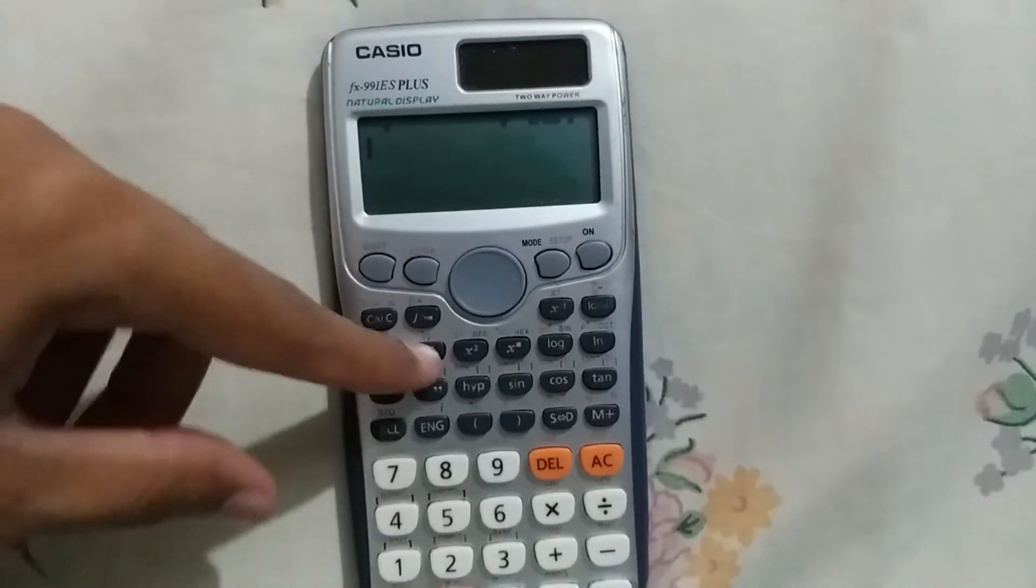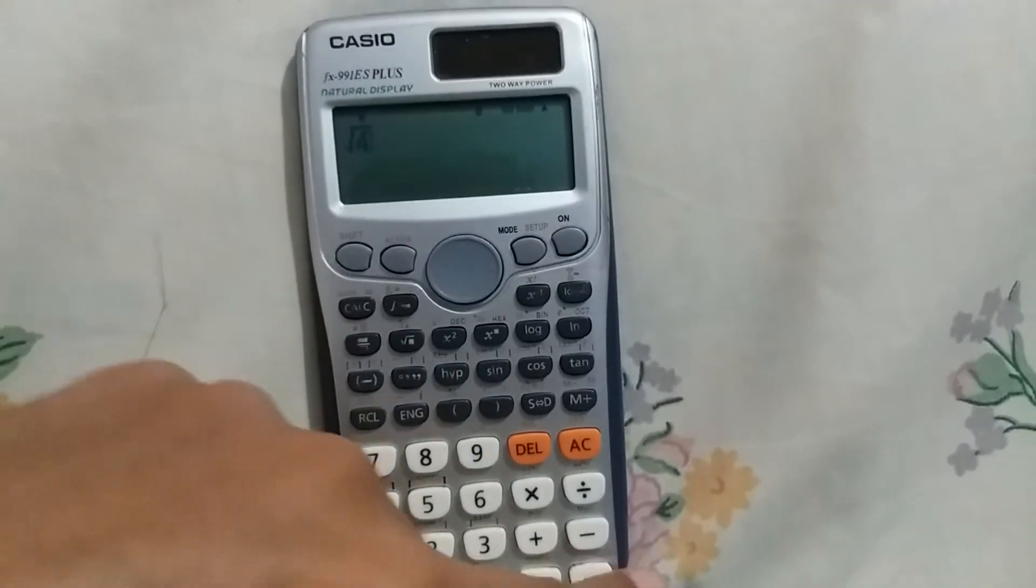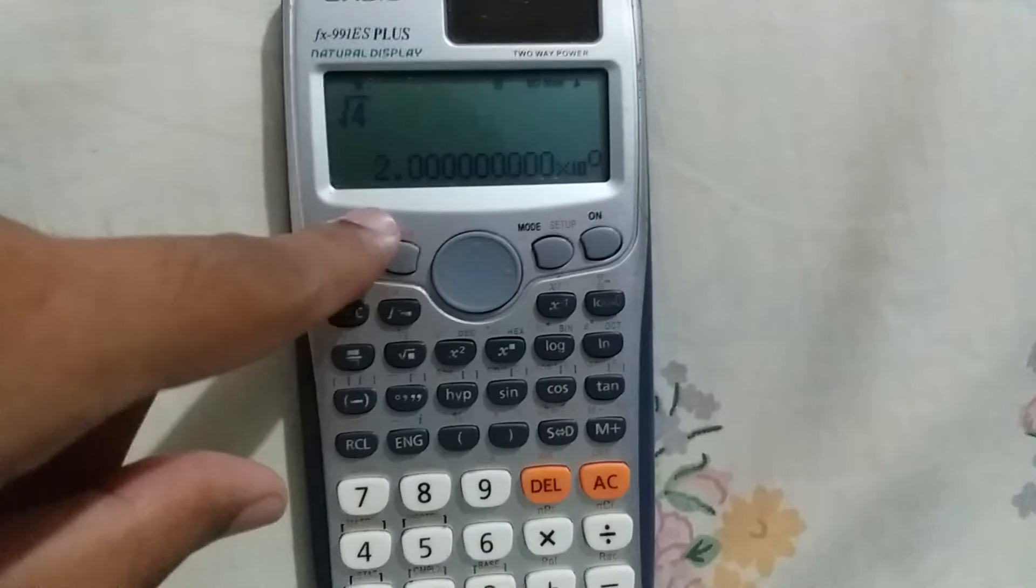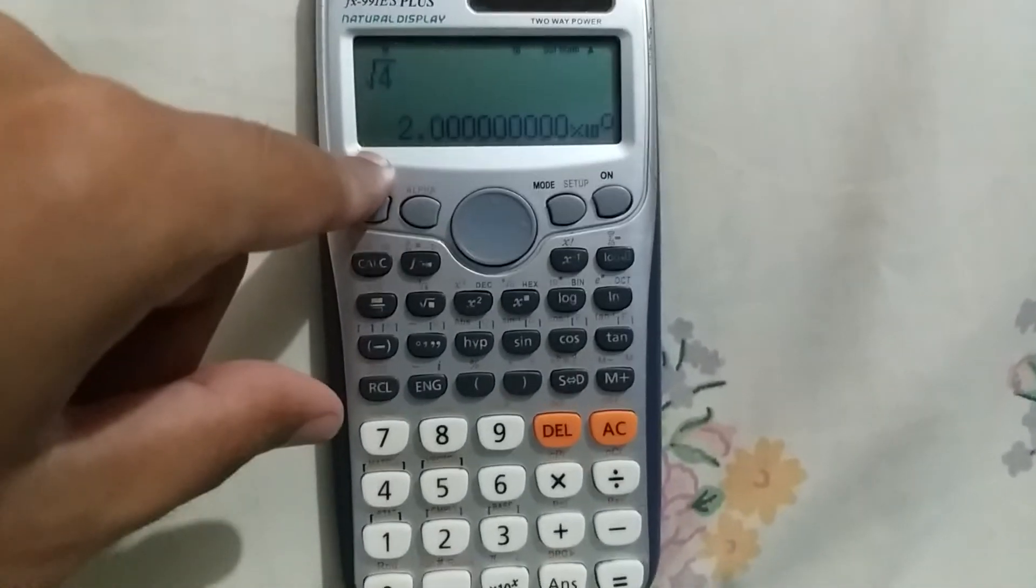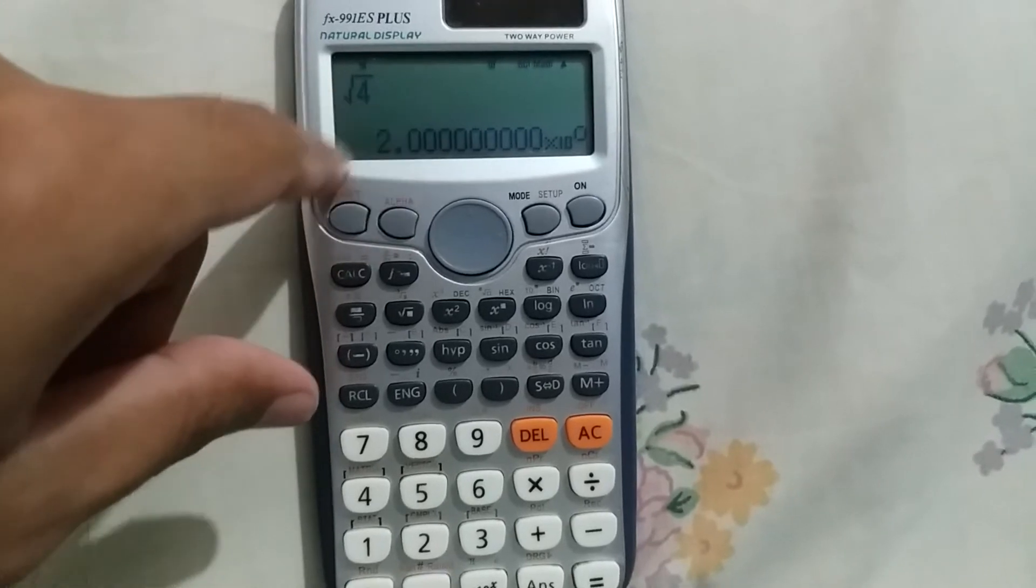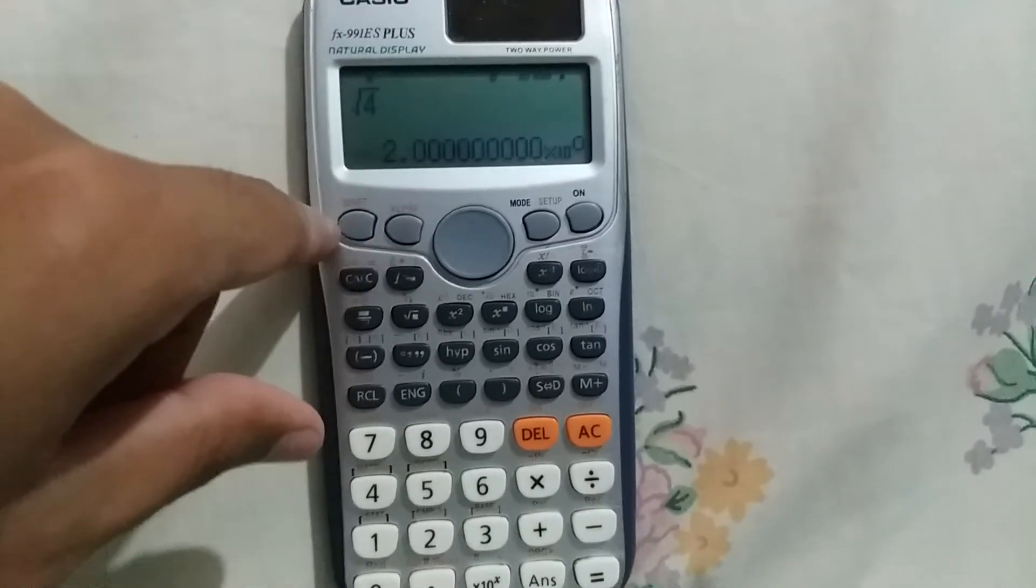As I take the square root of 4, you can see that the answer has been displayed in scientific notation. I don't want scientific notation - I just want the answer to be exactly 2. So I will convert my calculator to normal mode.